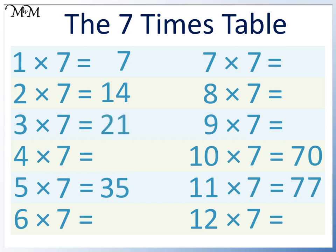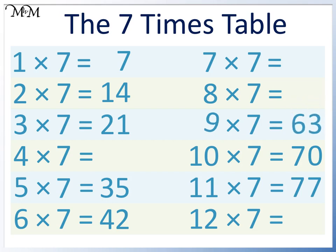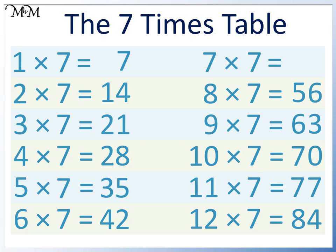3 times 7 equals 21; 2 plus 1 equals 3. 6 times 7 equals 42; 4 plus 2 equals 6. 9 times 7 equals 63; 6 plus 3 equals 9. 12 times 7 equals 84; 8 plus 4 equals 12. 4 times 7 equals 28 — half of 4 is 2 and double 4 is 8. 8 times 7 equals 56: we have 5, 6, 7, 8. 7 times 7 equals 49; we can add 7 to 42 to get 49.